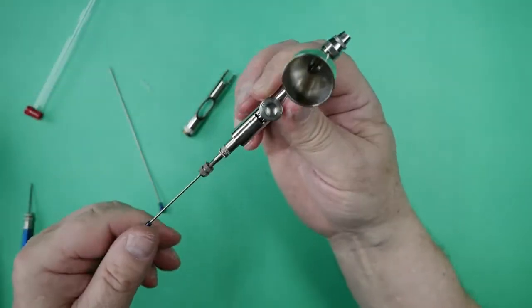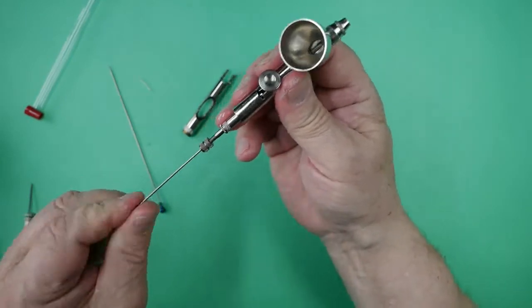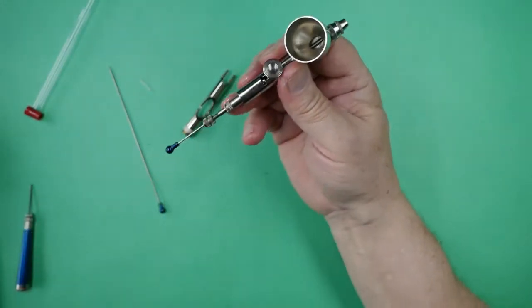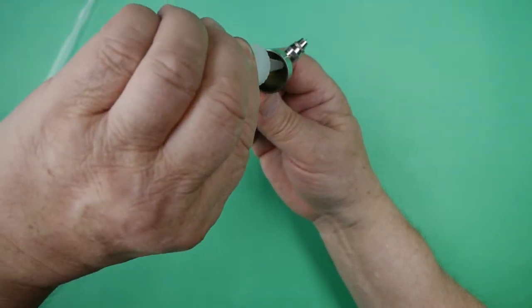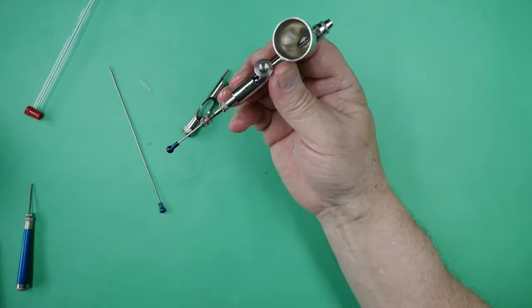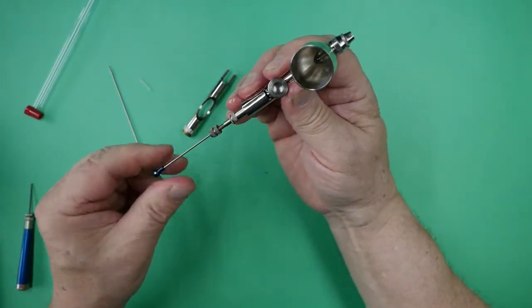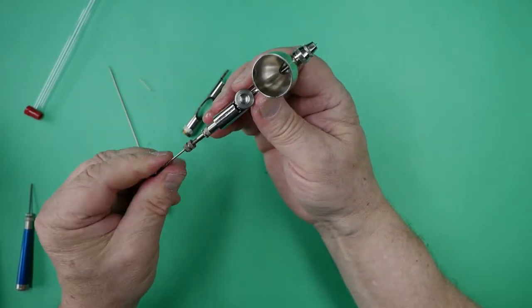And we do want some lubricant going into the needle bearing itself that was just replaced. And just to help this, I put a drop in the cup and just slide the needle back and forth a few times, turning it as we do.